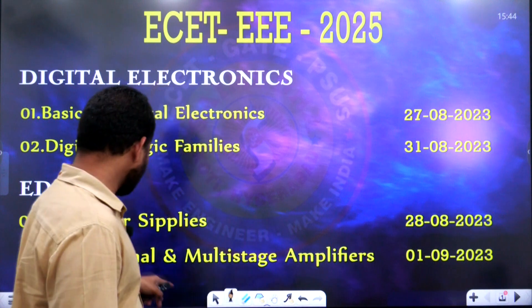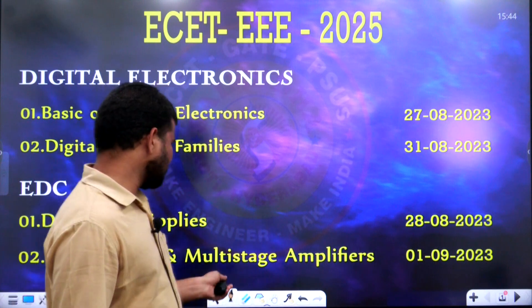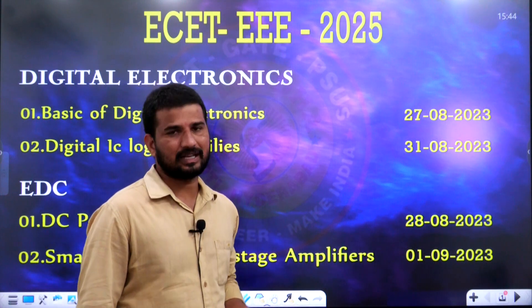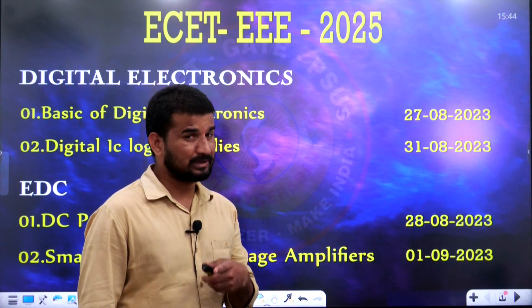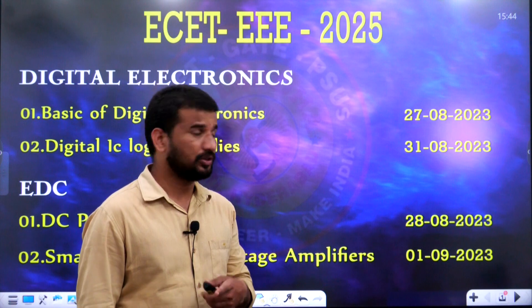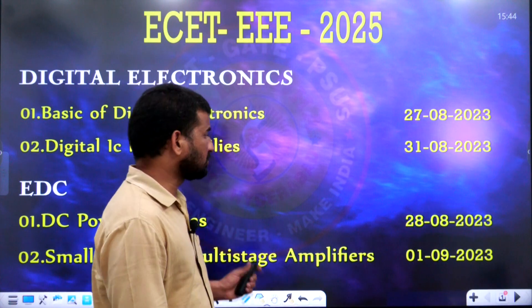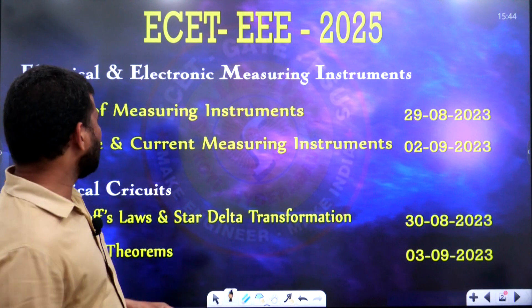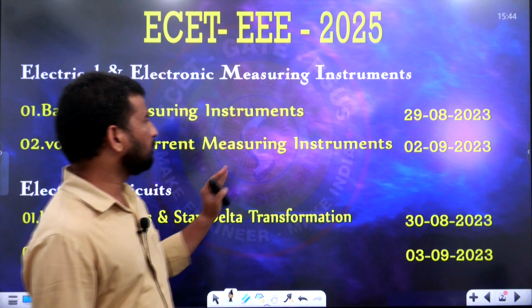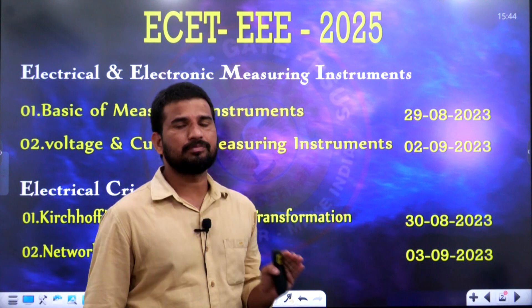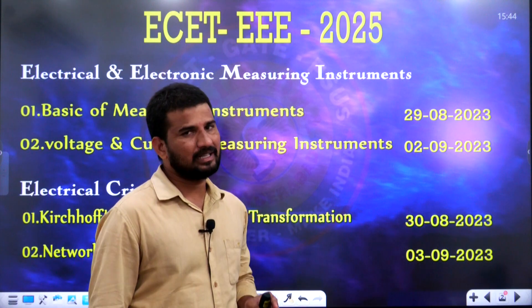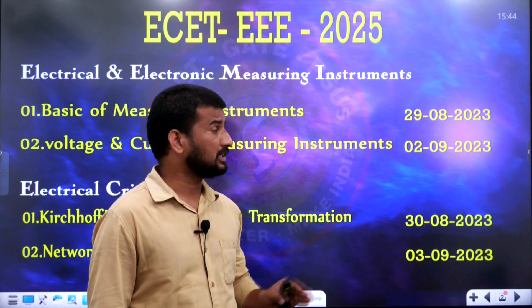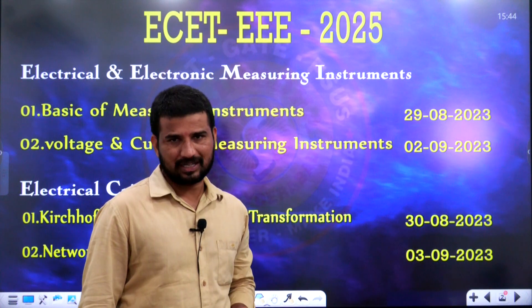On 1st September, Small Signal and Multi-Stage Amplifiers are examined. You can share this schedule on WhatsApp. On 2nd September, Voltage and Current Measuring Instruments for the Measuring Instruments subject, unit 2.